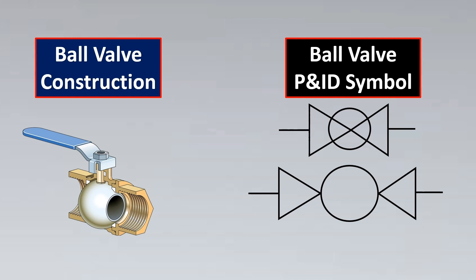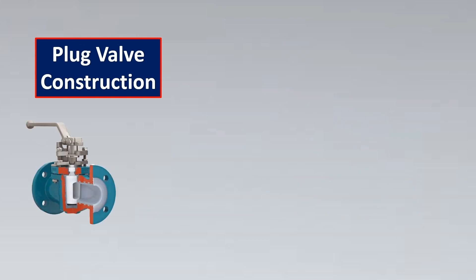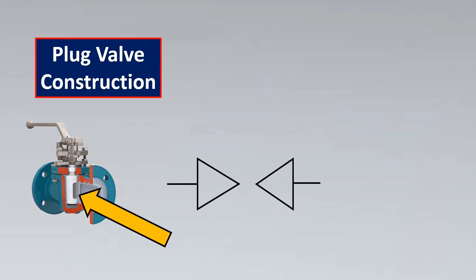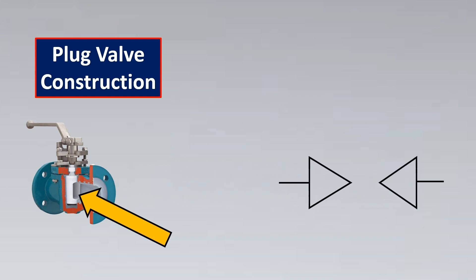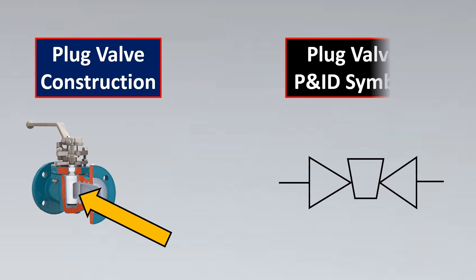In a plug valve, as the name suggests, a plug is used to basically modulate the flow. So in this case we take the generic valve symbol and the plug is represented like a trapezoid shape. This is your plug valve P&ID symbol.